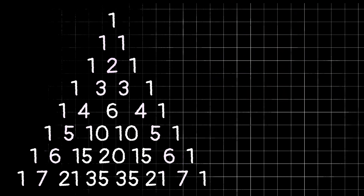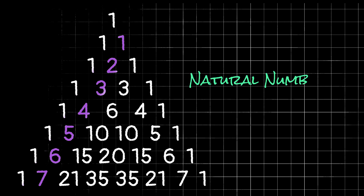Speaking of these diagonals, we already talked about the end diagonal consisting of all ones. But if we look at the next diagonal down from that, you'll see we have one, two, three, four. That's right — we have the natural numbers, or in other words, just the numbers we count with: one, two, three, and so on.